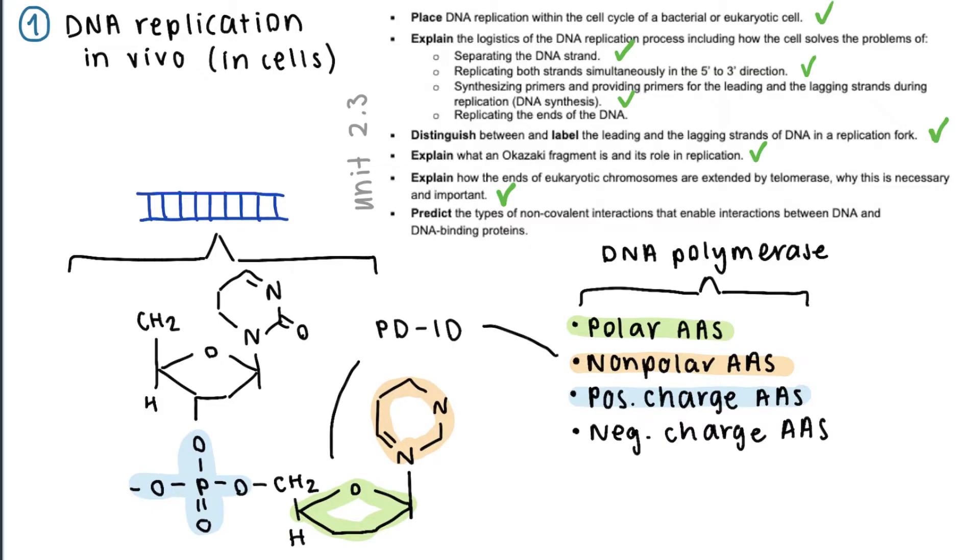Or between the phosphate group in the nucleotide and a polar amino acid in DNA polymerase, you could form a PD-Ion interaction. The system will always try to create the most strong bond out of these options.